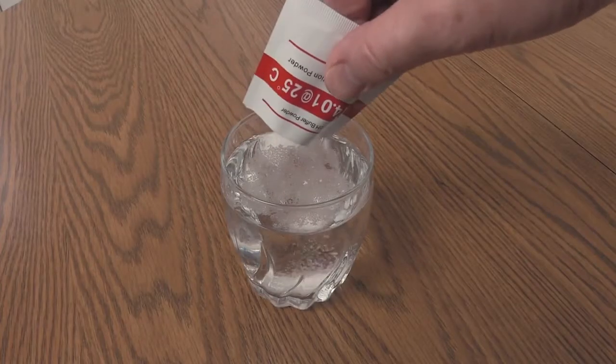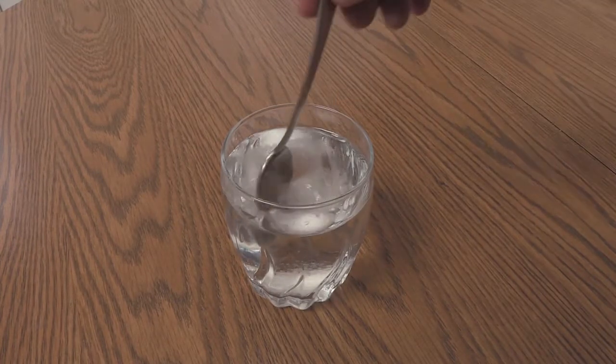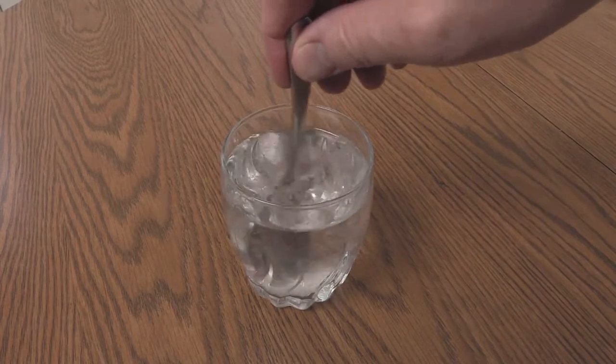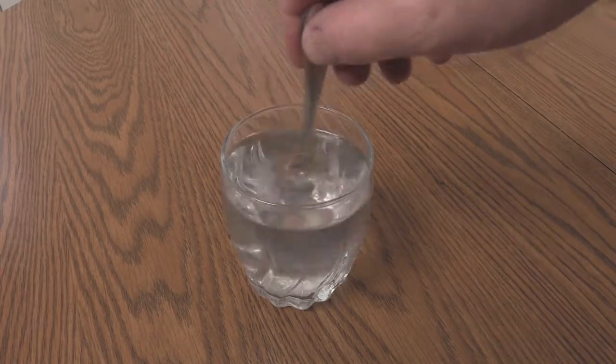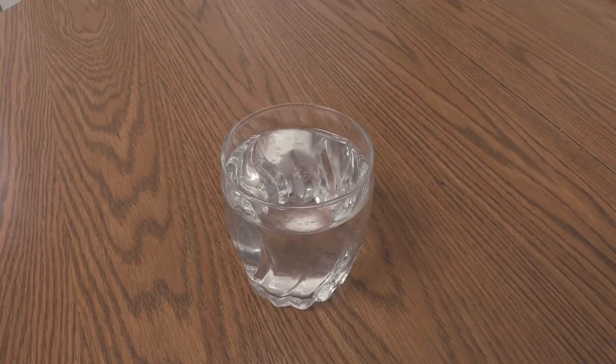Mix one packet of pH 4.0 powder into 250 milliliters of distilled water. Stir until most of the powder is dissolved. The buffers contain food grade ingredients but should be kept away from children and pets.